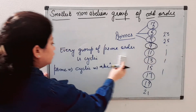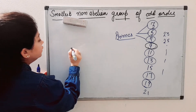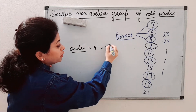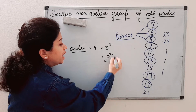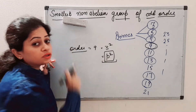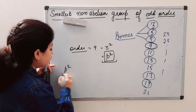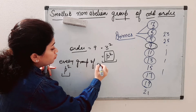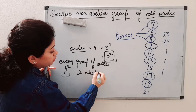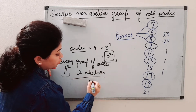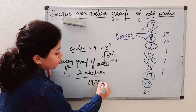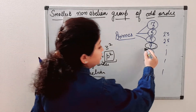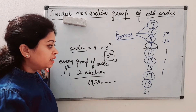Now we come to the group of order 9. Order 9 means 3², which is p². We have studied that every group of order p² is abelian. So groups of order 4, 9, 25 — all groups of order p² (prime squared) — are abelian. That means the group of order 9 is also abelian.